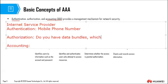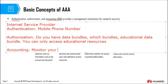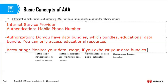For example, if you are loaded with educational data bundles, then you can only access educational resources on the internet — that is what we call authorization. Then accounting will monitor your data usage. If you exhaust your data bundles, then you are disconnected. That is the work of accounting.